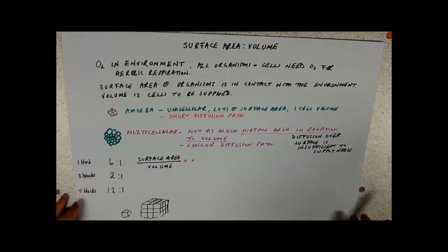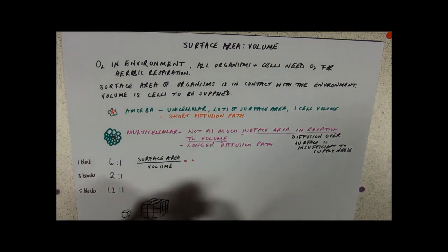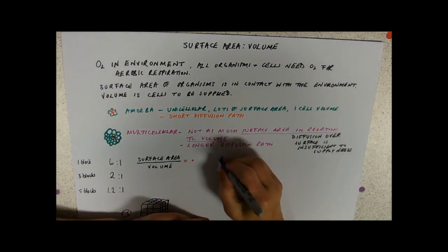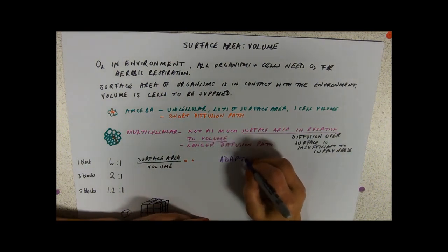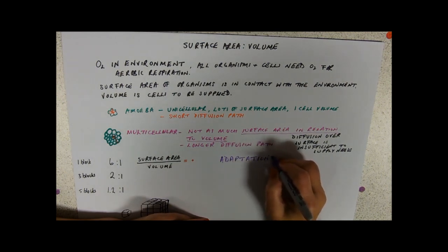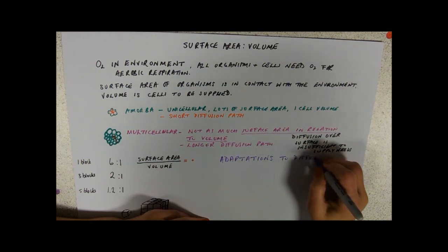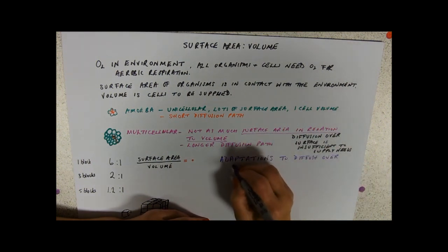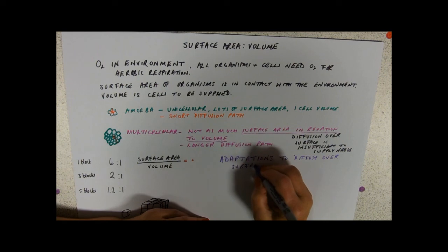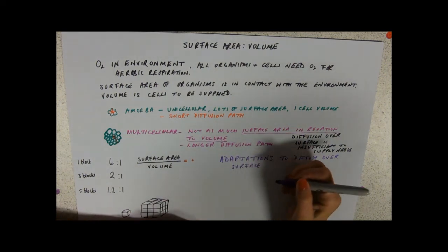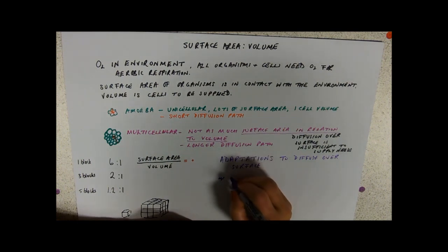Now in real life, evolution has resulted in a number of organisms that have some adaptations to be multicellular, but just do diffusion over the surface. So remember, this is a module, a little unit about adaptations for gas exchange.